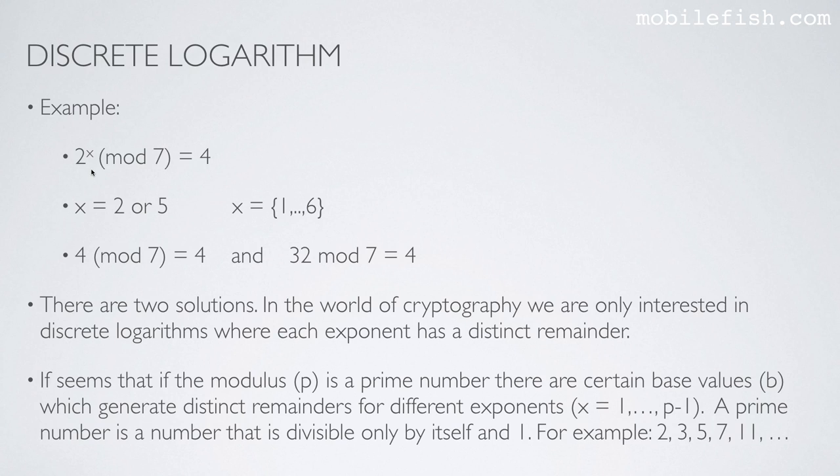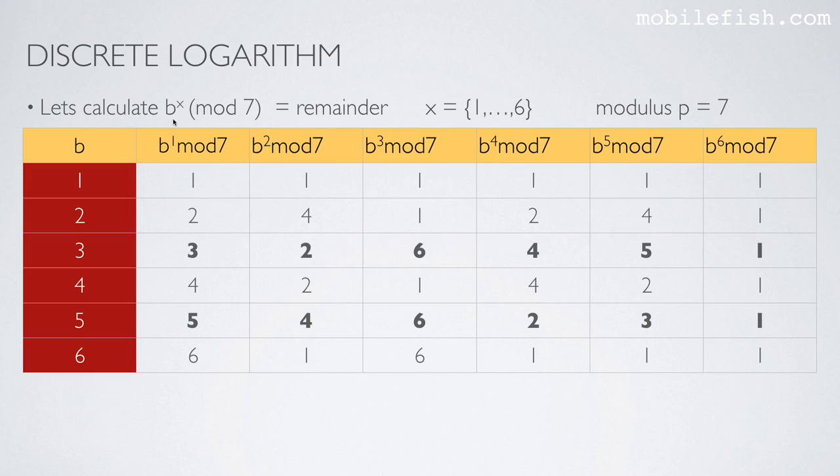By choosing the correct base value which generates distinct remainders for different exponents. So here is an example, how to find such a base value. Let's calculate b to the power of x, modulo 7, which calculates the remainder, whereby x will be of values between 1 and 6, and the modulus p is 7.